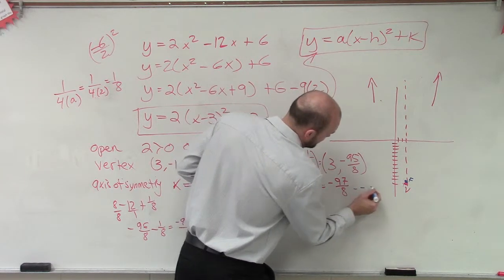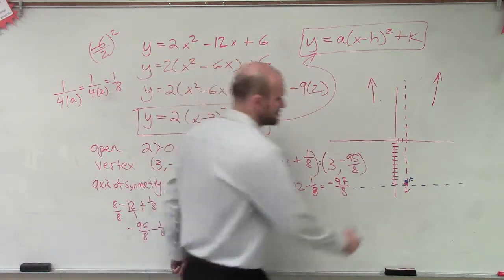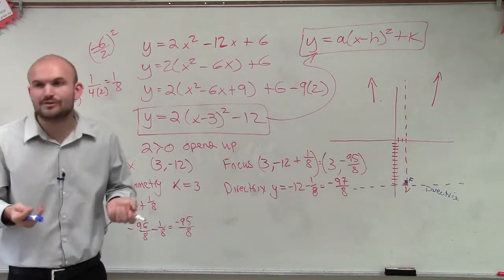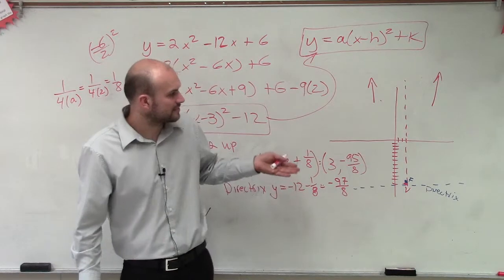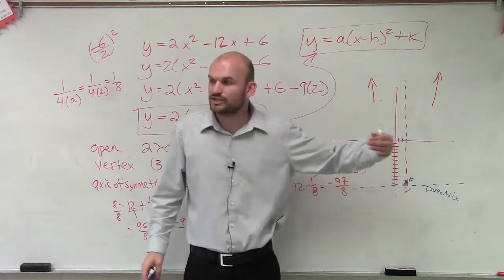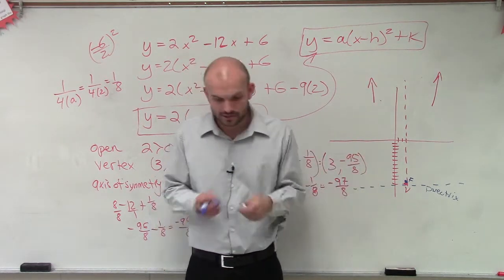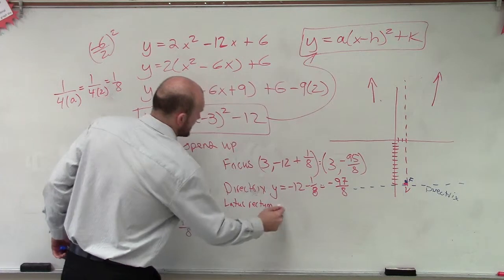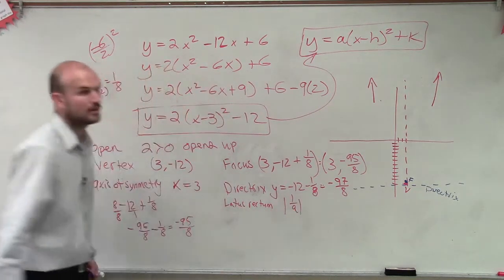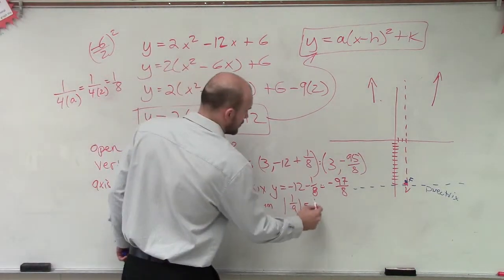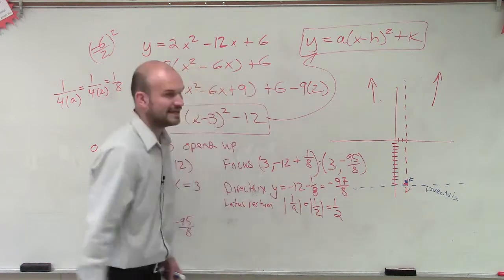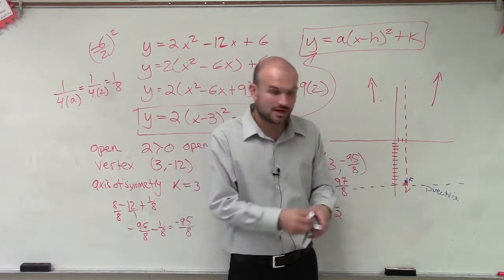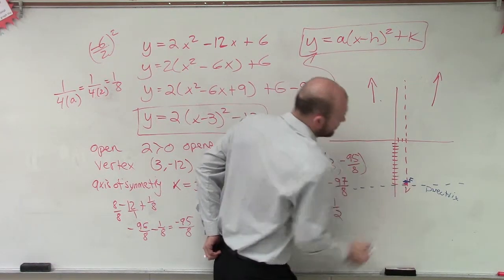So our directrix is just below our vertex as well. There's not really too much space there. Now, we could sketch the graph as is. We could easily just say the graph is, you know, just sketch it freehand. But what we're going to do is we're going to use the latus rectum to help us find our other two points. So remember, the latus rectum, our last point that we need to find, remember, the latus rectum is the absolute value of 1 over a.